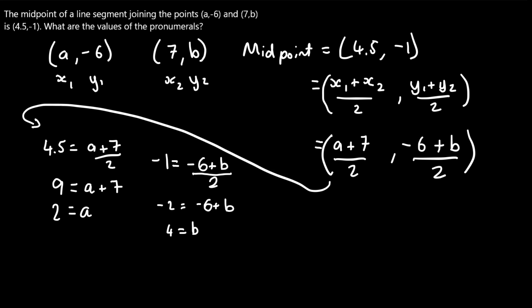And now we've got our solutions: b equals 4 and a equals 2. We've found the values of the pronumerals. Thanks for joining me, and I'll see you next time.